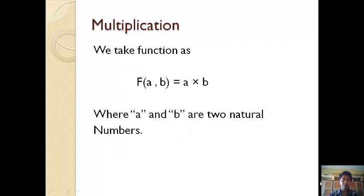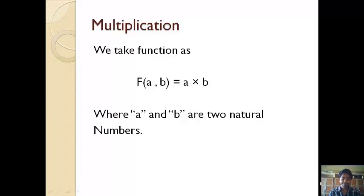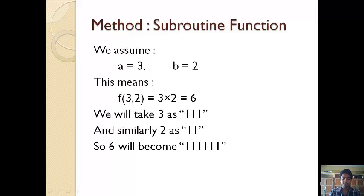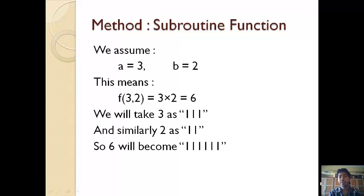We are going to use multiplication. We assume a function F of A, B which is equal to A into B, where A and B are natural numbers. We assume A is equal to 3 and B is equal to 2. A is the multiplier and B is the multiplicand. We represent 3 as 1 1 1 and 2 as 1 1. So when we multiply 3 into 2 that is going to be 6, which will become 1 1 1 1 1 1.